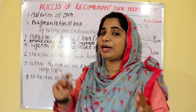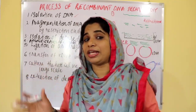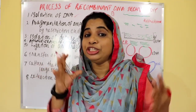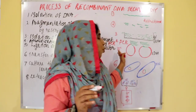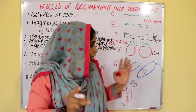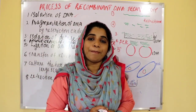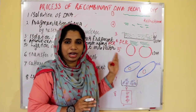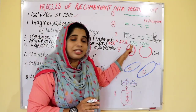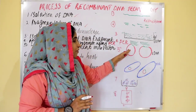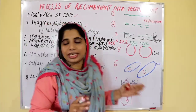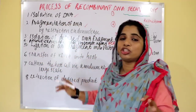We need to select the vector. The DNA fragment is introduced into the vector. The DNA fragment inserted into the vector creates recombinant DNA. Recombinant DNA contains the desirable gene of interest.